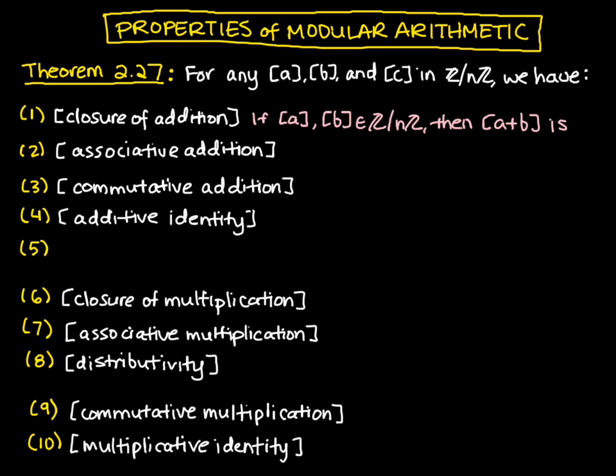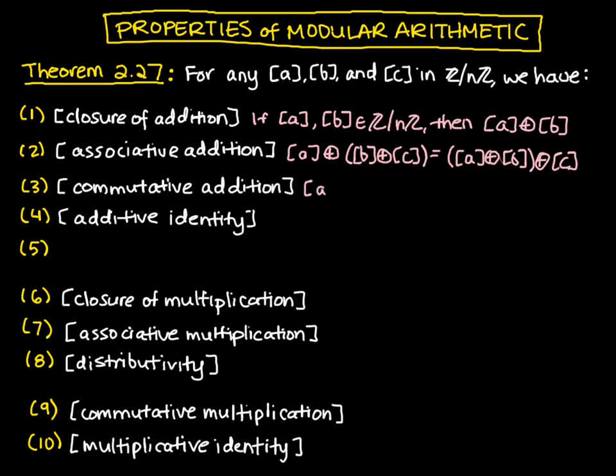Next, we have associativity of addition. I just realized my notation was wrong previously, so here I should have a plus b. Now we're looking at property two, associative of addition. So if we have a plus the sum of b and c, that's the same thing as the sum of a and b plus c. We also have a commutative property under addition, which tells us that a plus b is equivalent to b plus a.